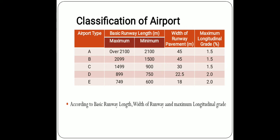Likewise, for types B, C, D and E, the basic runway length and width of runway pavement vary accordingly for each type of airport.